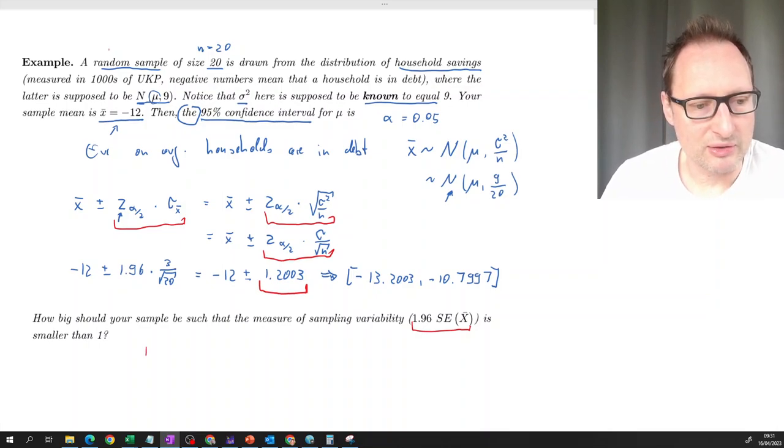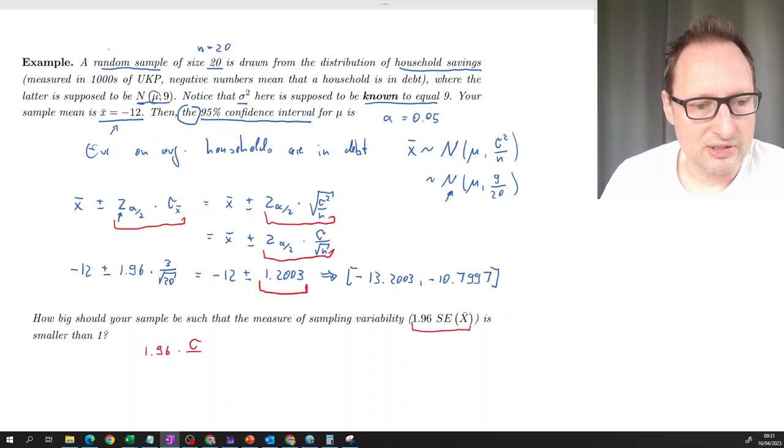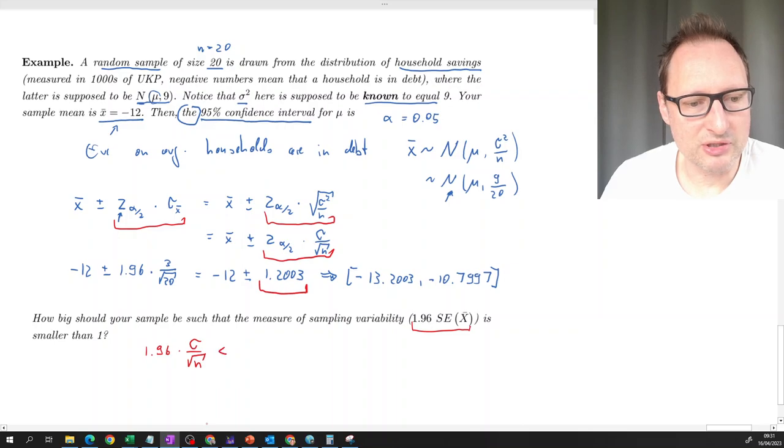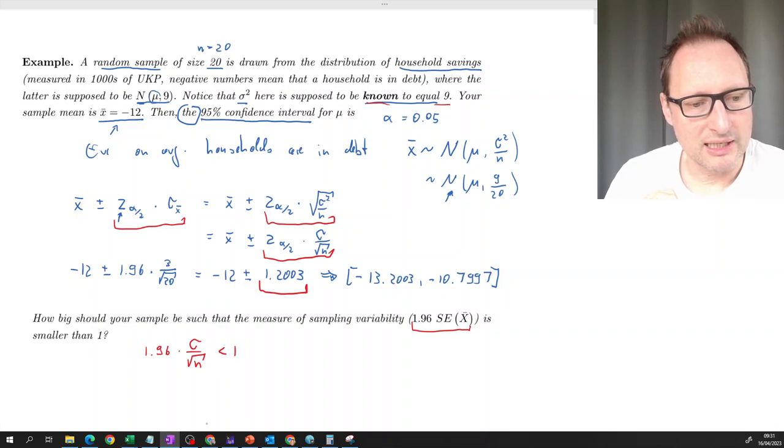So how big should your sample be such that the measure of sampling variability is smaller than 1? So what we want is that 1.96, because we are talking about a 95% confidence interval, times sigma over square root n. We want this to be smaller than 1. So now the actual sigma will stay the same because we are having a known variance of 9 and therefore a known standard deviation of 3.